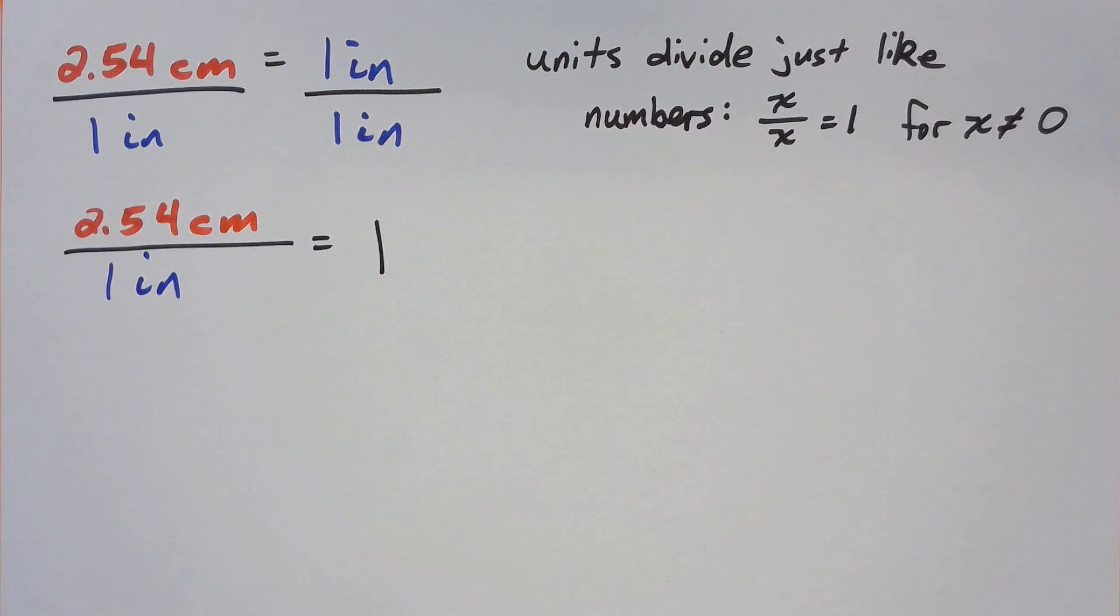This is because multiplying by 1 is an identity operation. For example, 4 times 1 is 4, 3.14 times 1 is 3.14, and x times 1 is x.